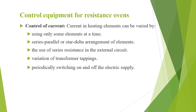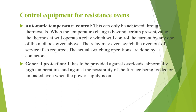Other methods of current control include: use of series resistance in the external circuit — this is wasteful in power and therefore uneconomical, but sometimes used for small units due to low cost and ease of control; variation of transformer tappings, only applicable where a transformer is used for stepping down the voltage; periodically switching on and off the electric supply — the final temperature is the ratio of on-time to the sum of on and off time; and automatic temperature control through thermostats, where the thermostat operates a relay to control current by any of the above methods.